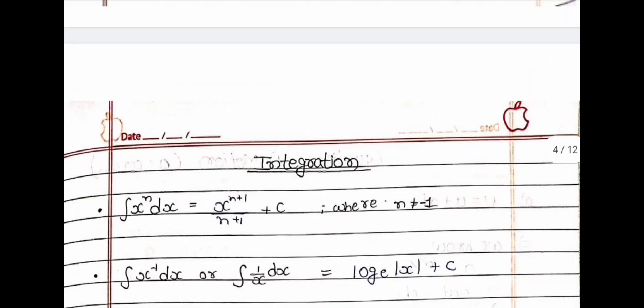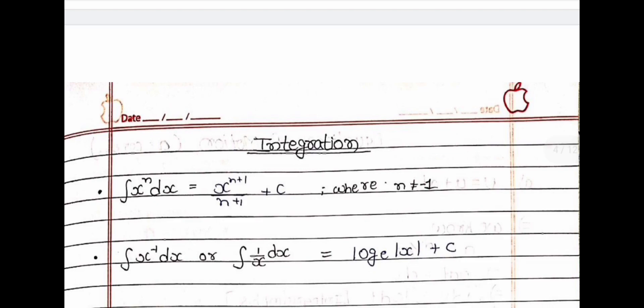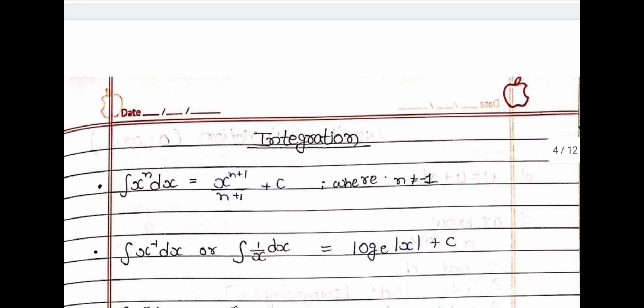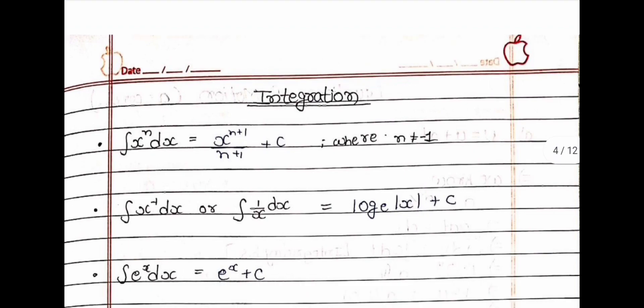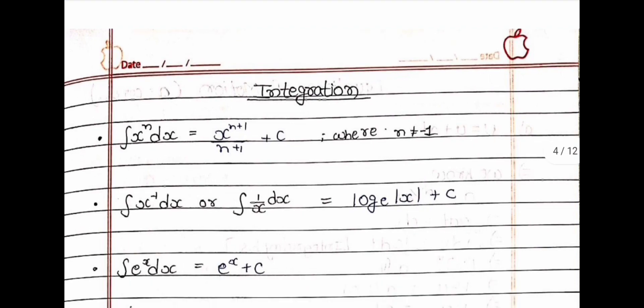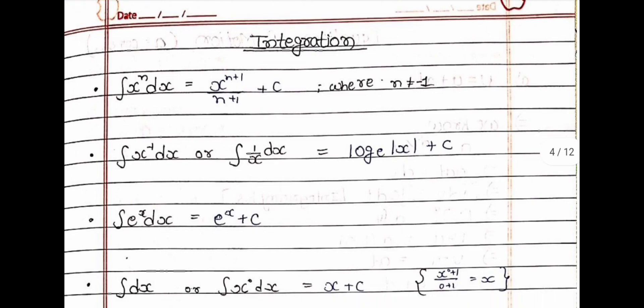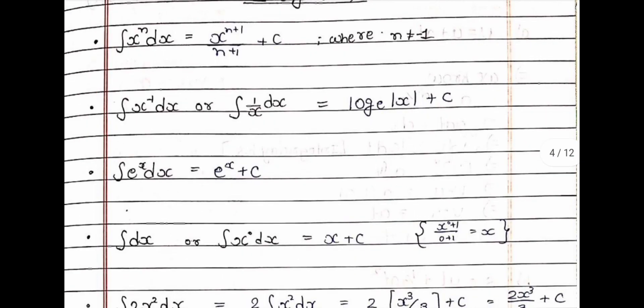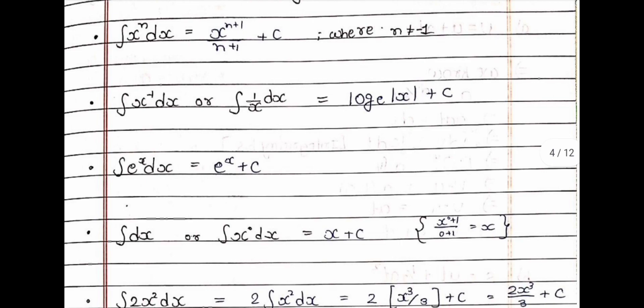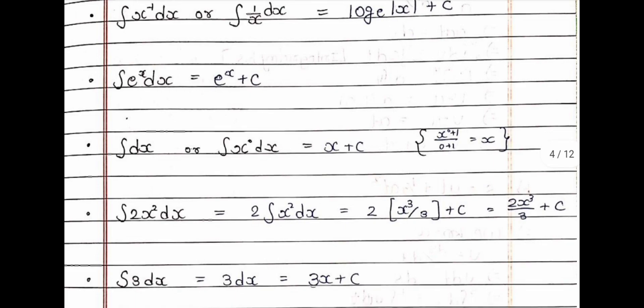In Class 11th, you have to learn some basic integration formulas. The integration of xⁿ dx = x^(n+1) / (n+1) + c. In integration you must also add +c, representing the constant term. Another formula: integration of x⁻¹ dx or 1/x dx = log_e |x| + c. The integration of eˣ dx = eˣ + c. Also, integration of dx (or x⁰ dx) = x + c.